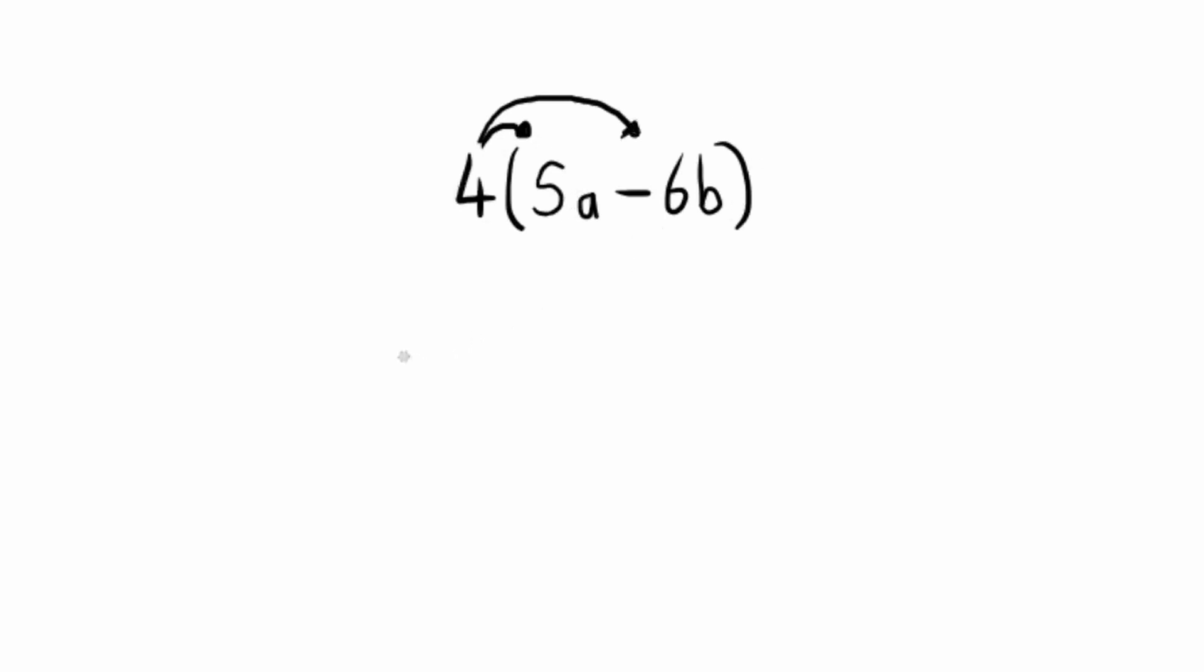So how would we do this? Well, 4 multiplied by 5a - I multiply the coefficients which is 4 multiplied by 5, which is 20, and the only variable I have is a. Let us look then at the second term.